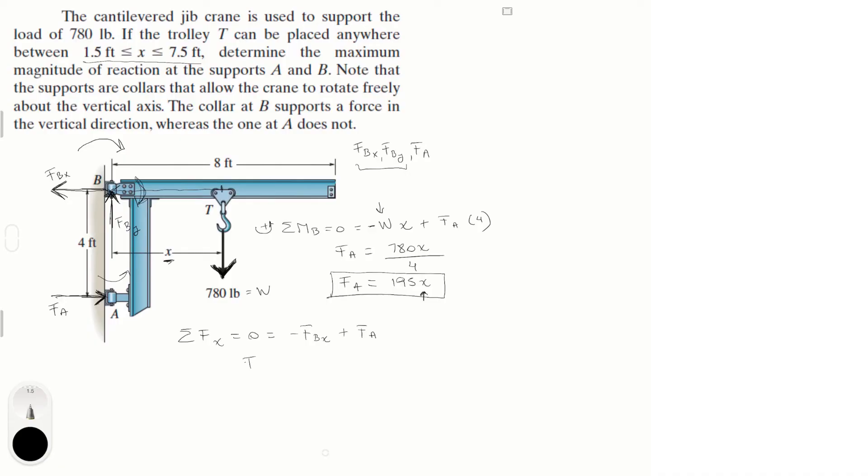So this means that F of B of x is equal to F of A. And again, this means that F of B of x is equal to 195x. And again, notice, the bigger the x, the bigger F of B of x reaction it is. So this is all pointing that the maximum reaction is going to be at 7.5.